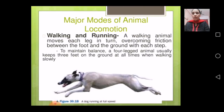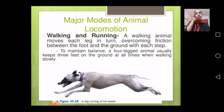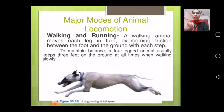Animals like dogs and cats use their limbs to walk. A walking animal moves each leg in turn, overcoming friction between the foot and the ground with each step.